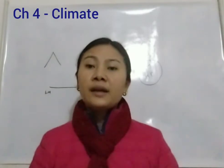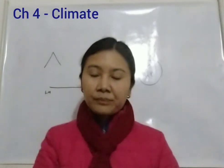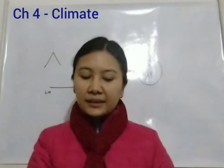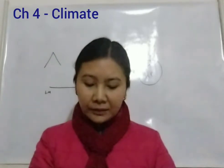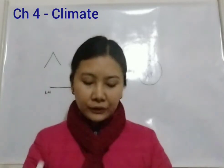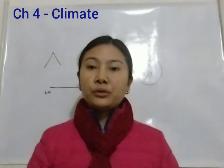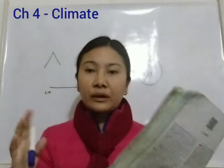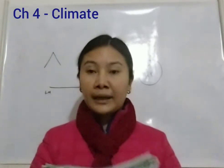The six major controls of climate are: latitude, altitude, pressure and wind system, distance from sea, ocean currents, and relief features. Due to the curvature of the earth, the amount of solar energy received varies according to latitude.